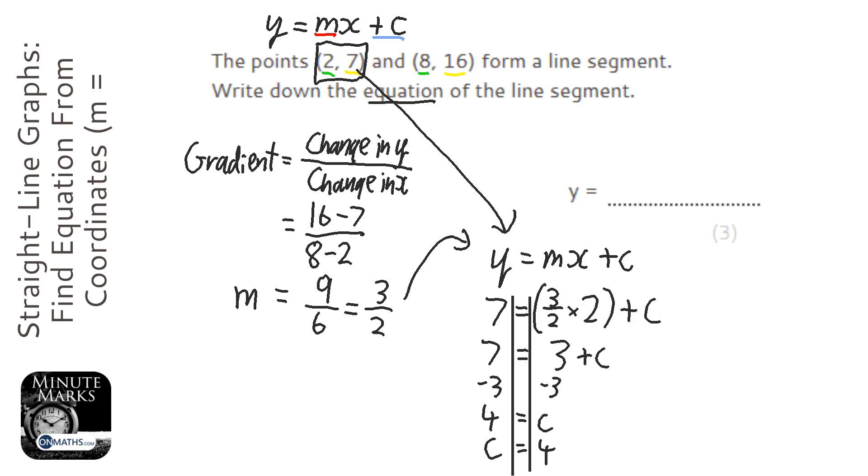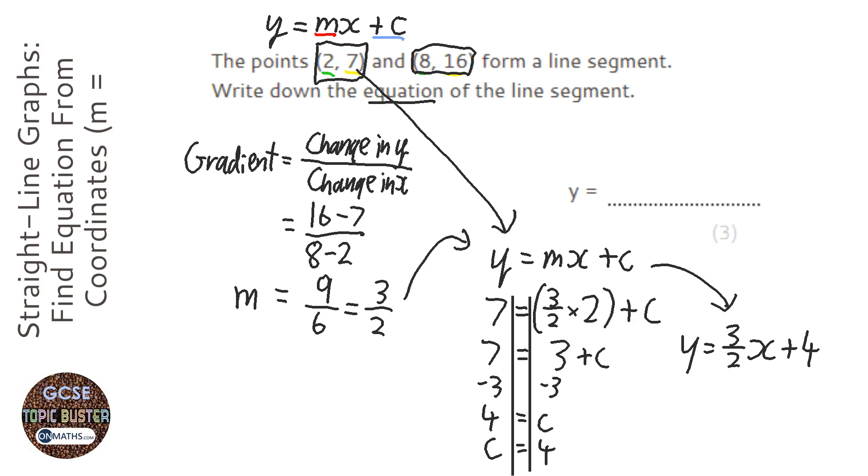And you can check that for the other coordinate. So you could put these in to that equation now that we know what it is. Well, let's just write it out to be sure. So y equals 3 over 2, or 1 and a half, x plus 4. And if we put in the value of 8 here, so 1 and a half times 8 plus 4, is that equal to 16? Well, 1 and a half times 8 is 12. 12 plus 4 is 16. So our formula is 3 over 2x plus 4.